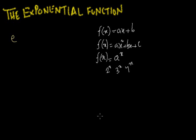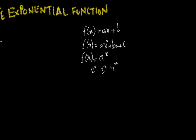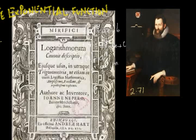E was first referenced by John Napier, a brilliant man who published a book called The Miraculous Canon of Logarithm. He invented logarithm with this book — it's a book that took him 20 years to write. Logarithm is actually the study of exponents, and he worked with 2.71.